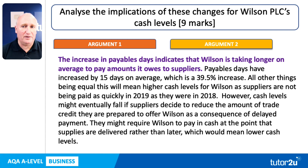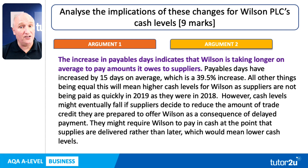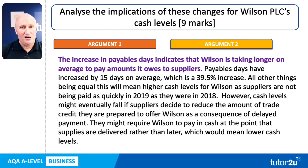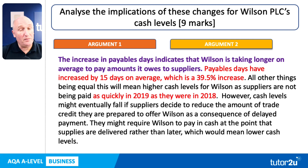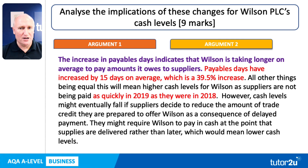That will probably be enough, but there's another side to this. Cash levels might eventually fall — not increase — if suppliers decide to reduce the amount of credit they're prepared to offer, partly because Wilson appears to be delaying payments. As a supplier, you might require Wilson to pay in cash rather than being given trade credit, which would actually mean lower cash levels. Again, we don't know, but that's a potential implication. We just have to make sure we use the data in the table to support the analysis, and the examiner will be happy to see the table being used.